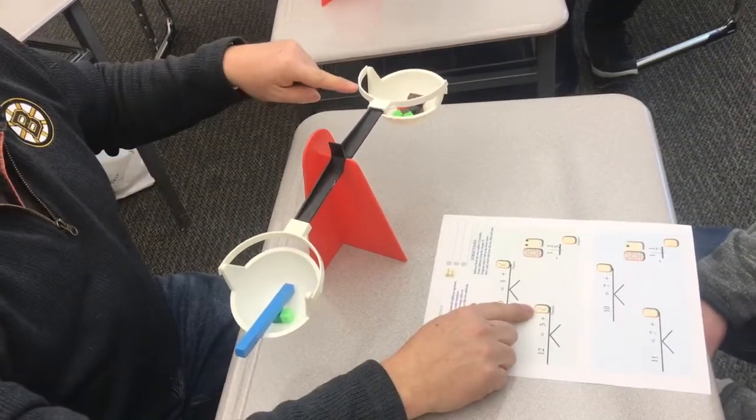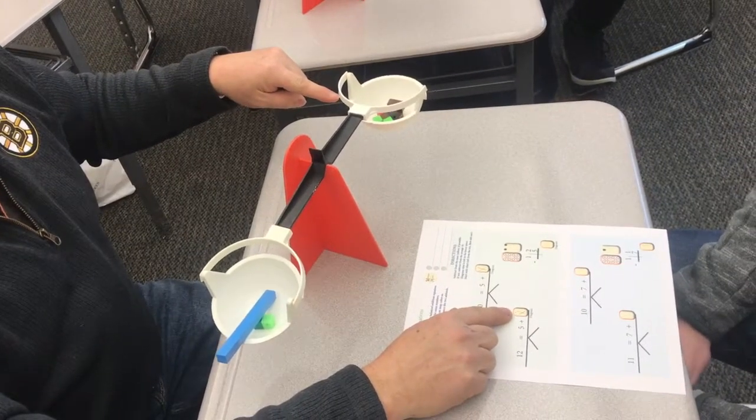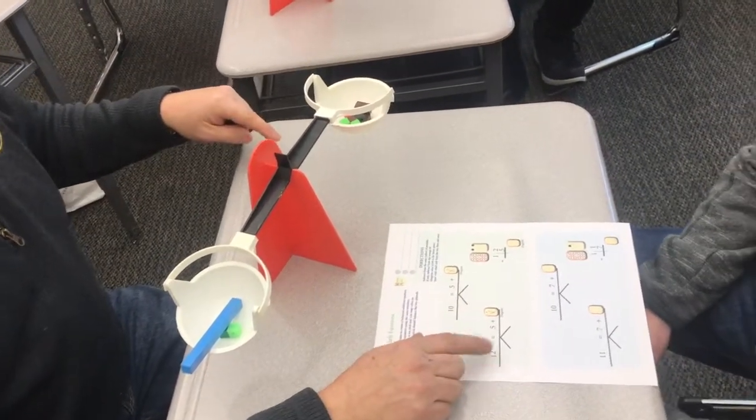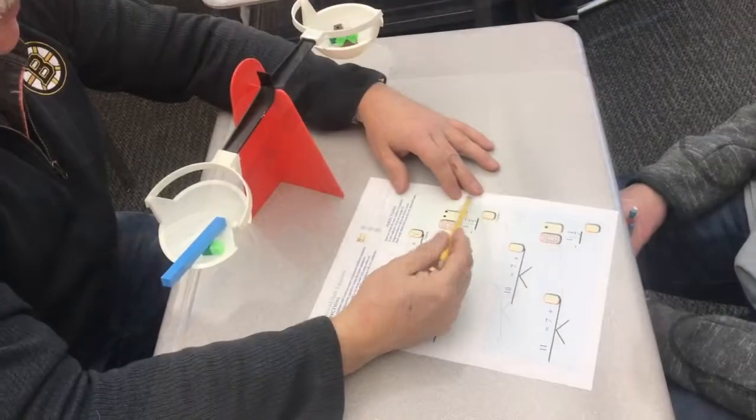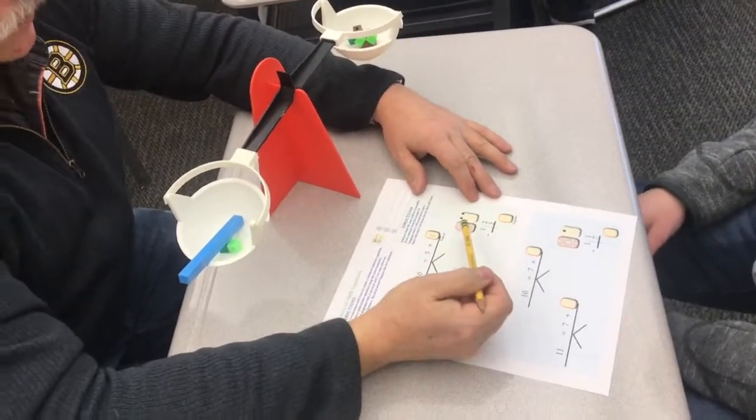Nice. How much did I put over here? 7. Good. Read that whole sentence. 12 equals 5 plus 7. Nice. Same problem, but it looks different over here.